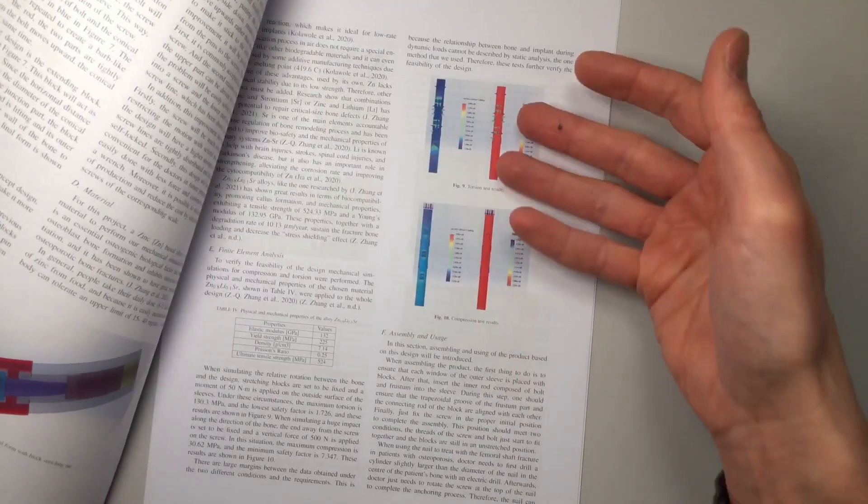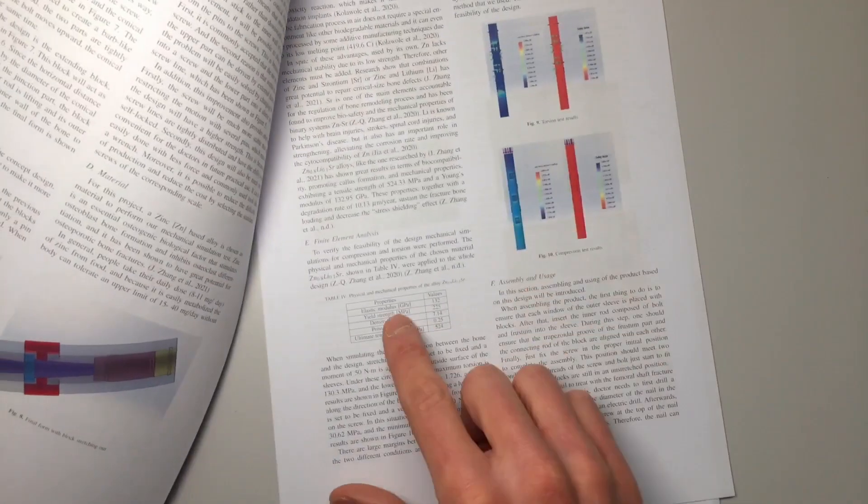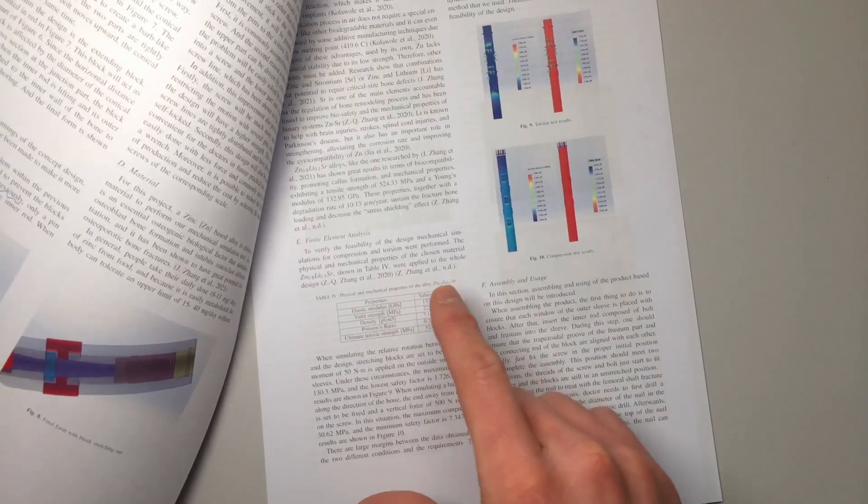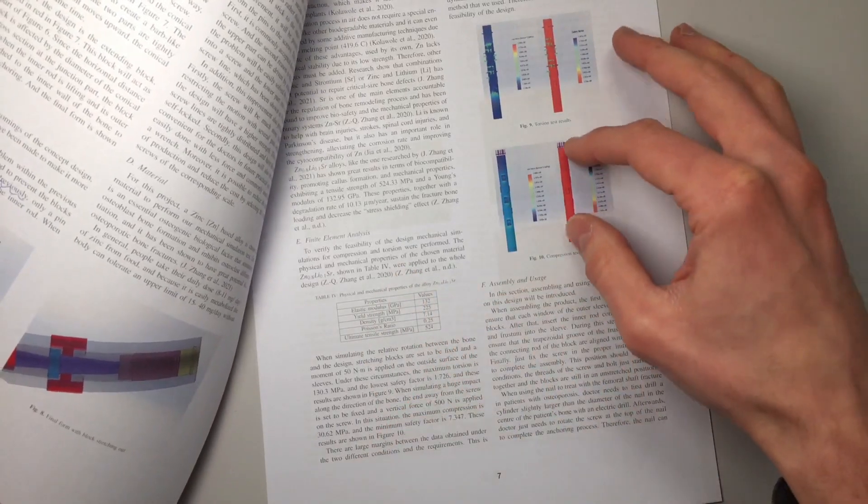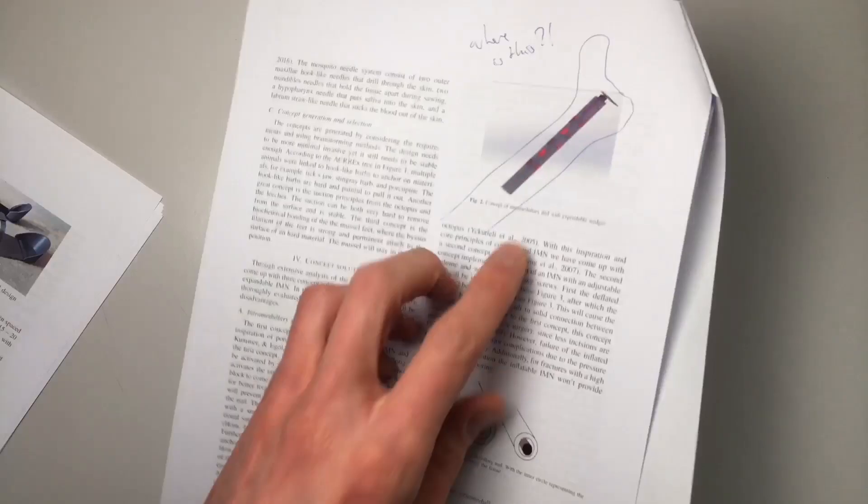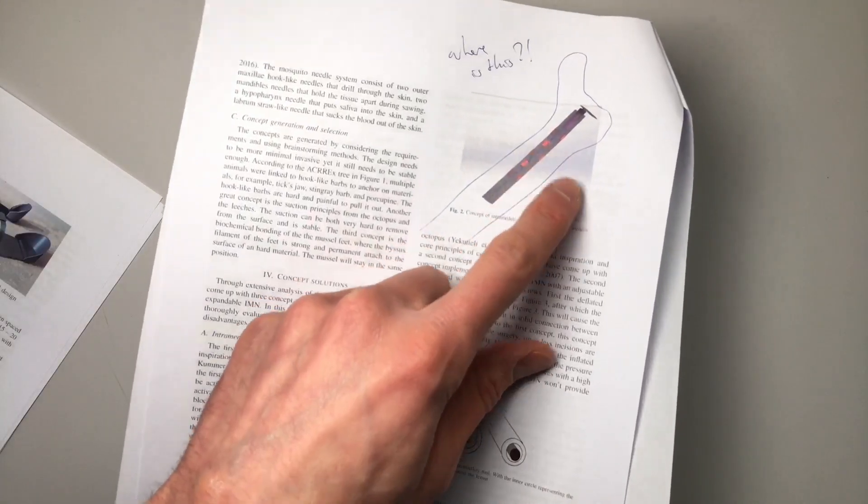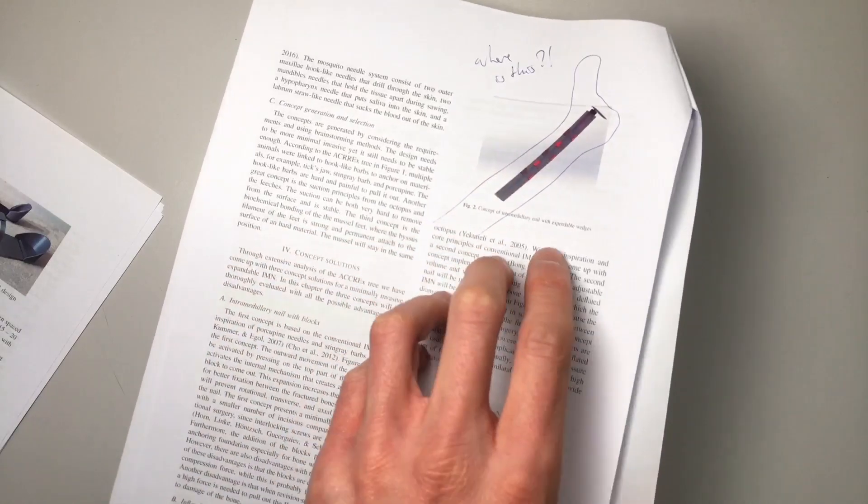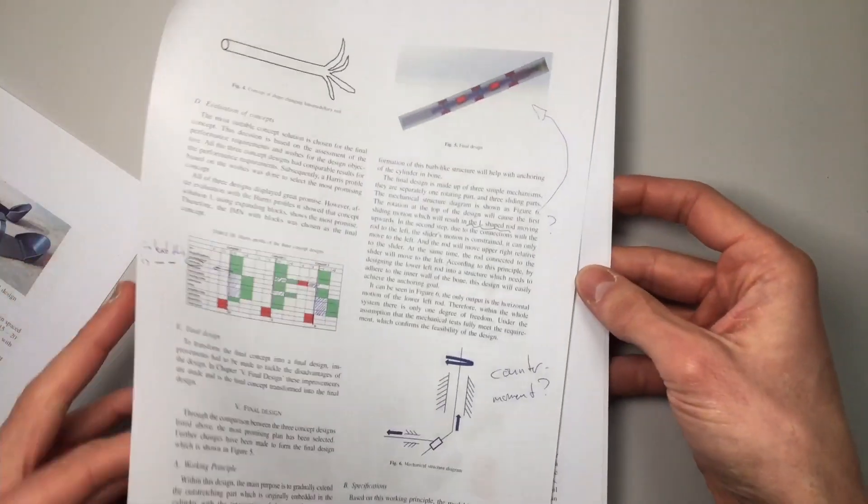Here's a different example, again finite element analysis, also super detailed data on a specific alloy of metal that's being used. This is by the way a pin for fixing bones, a pin you don't need to fix with screws but that has these sorts of things that come out to keep it in place, which again, nice idea.